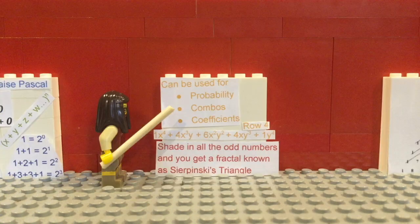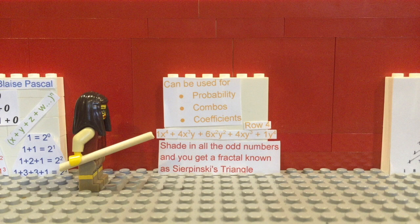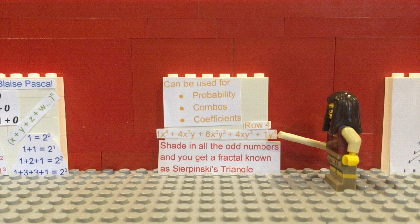Some of the things Pascal's Triangle can find is probability, combinatorics, and coefficient of binomial expansion. This is the coefficient of binomial expansion for row 4. The exponents of x and y have to add up to the row number, in this case 4.